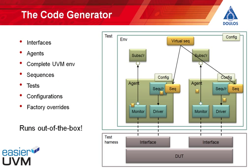Let's take a look at the code generator. The code generator generates everything you need in a UVM environment to get running. You specify the interfaces to the design under test, then run the code generator, which generates the SystemVerilog interfaces, the UVM agents, the complete UVM environment including an initial set of sequences and tests, UVM configuration database information including configuration objects to configure the agents and factory overrides — and all of this generated code just runs out of the box. You can then gradually populate the missing pieces to create a complete set of production code.